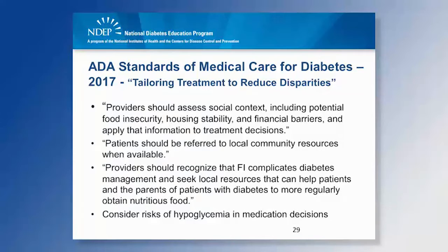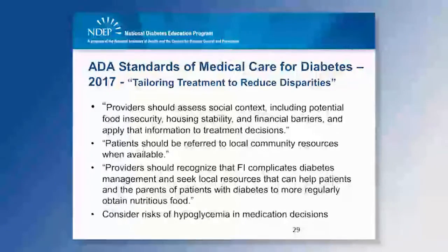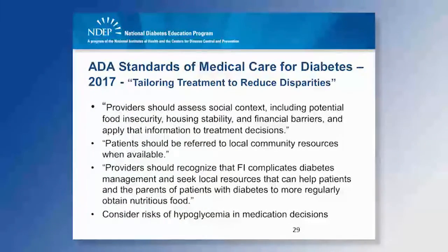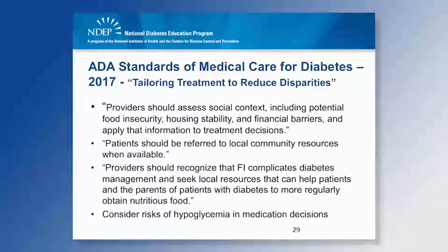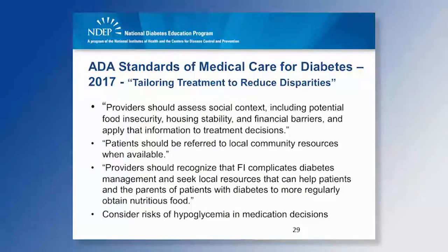These quotations are from the ADA Standards of Medical Care for Diabetes from 2017, in the section Tailoring Treatment to Reduce Disparities. The ADA states that providers should assess social context, including potential food insecurity, housing stability, and financial barriers, and apply that information to treatment decisions. Patients should be referred to local community resources when available. Providers should recognize that food insecurity complicates diabetes management and seek local resources to help patients more regularly obtain nutritious foods, and should consider risk of hypoglycemia in medication decisions.